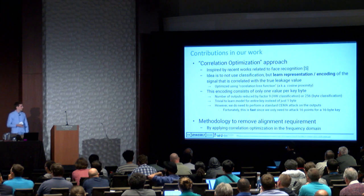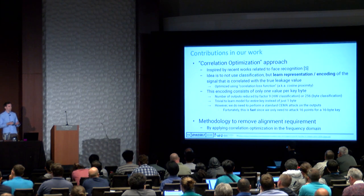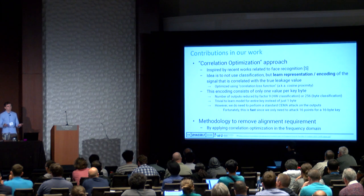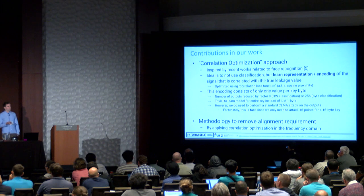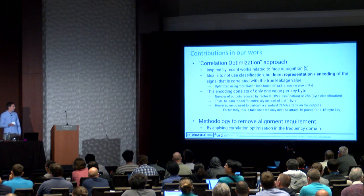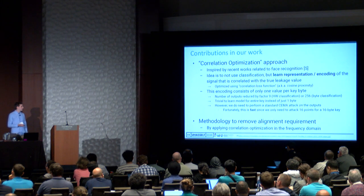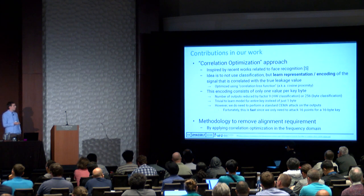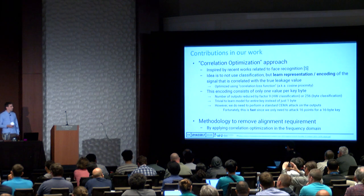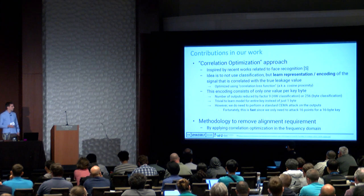What we did in our work is something slightly different, more inspired by recent works in face recognition. The idea is not to classify and output a probability, but rather to learn a representation or encoding of the inputs—in this case, our EM traces. We learn an encoding of the traces that is correlated with the true leakage value output by the device, by optimizing the correlation loss function, known in the machine learning community as the cosine proximity function. The advantage is that we only have one value per key byte as output—a reduction by a factor of 9 for Hamming weight learning and by a factor of 256 for single-byte classification. This also makes it trivial to learn a model for the entire key.